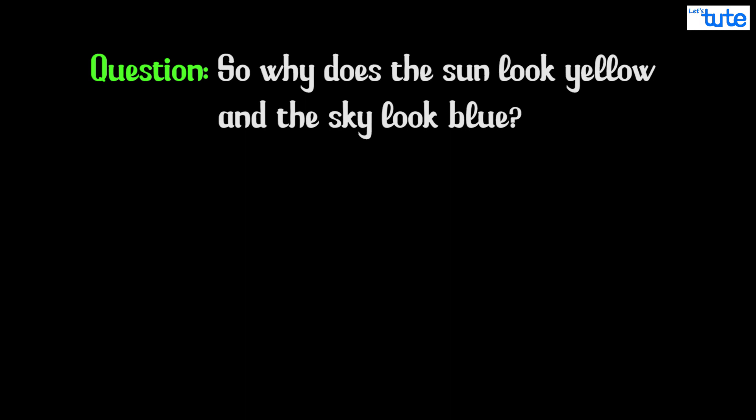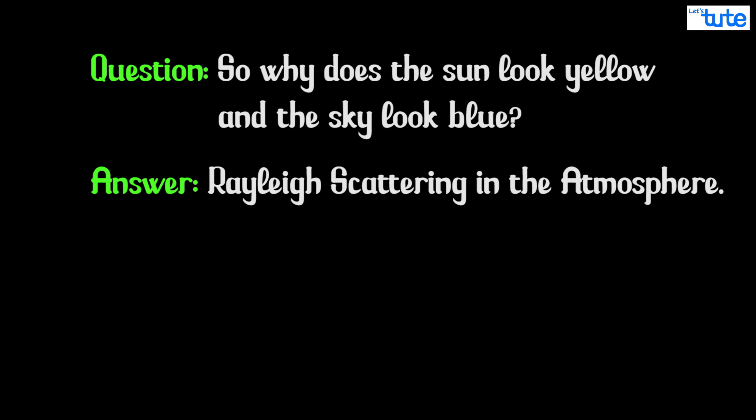So why does the sun look yellow and the sky look blue? The answer is really scattering in the atmosphere or more simply because of the atmosphere.